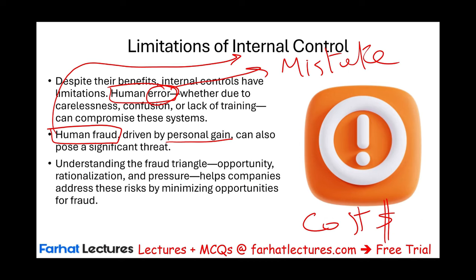We also have to understand something called the fraud triangle. The fraud triangle is composed of three things: opportunity, rationalization, and pressure. Let's start with pressure. Pressure means you have some sort of pressure to commit fraud.